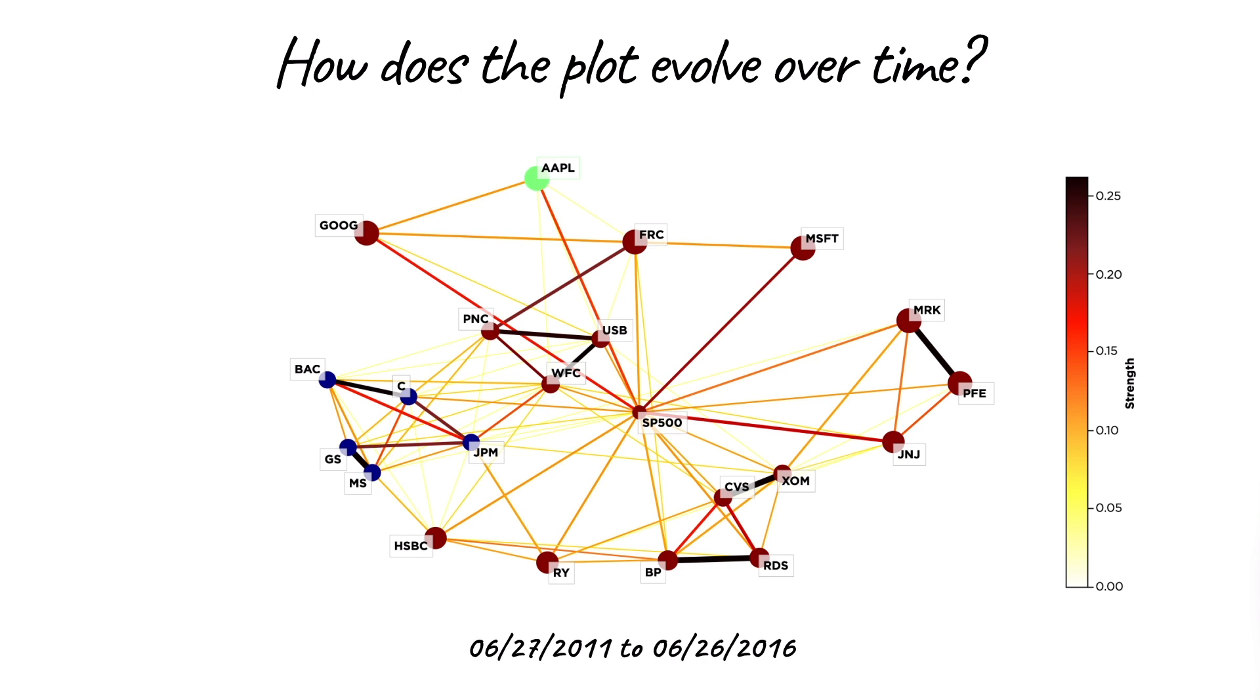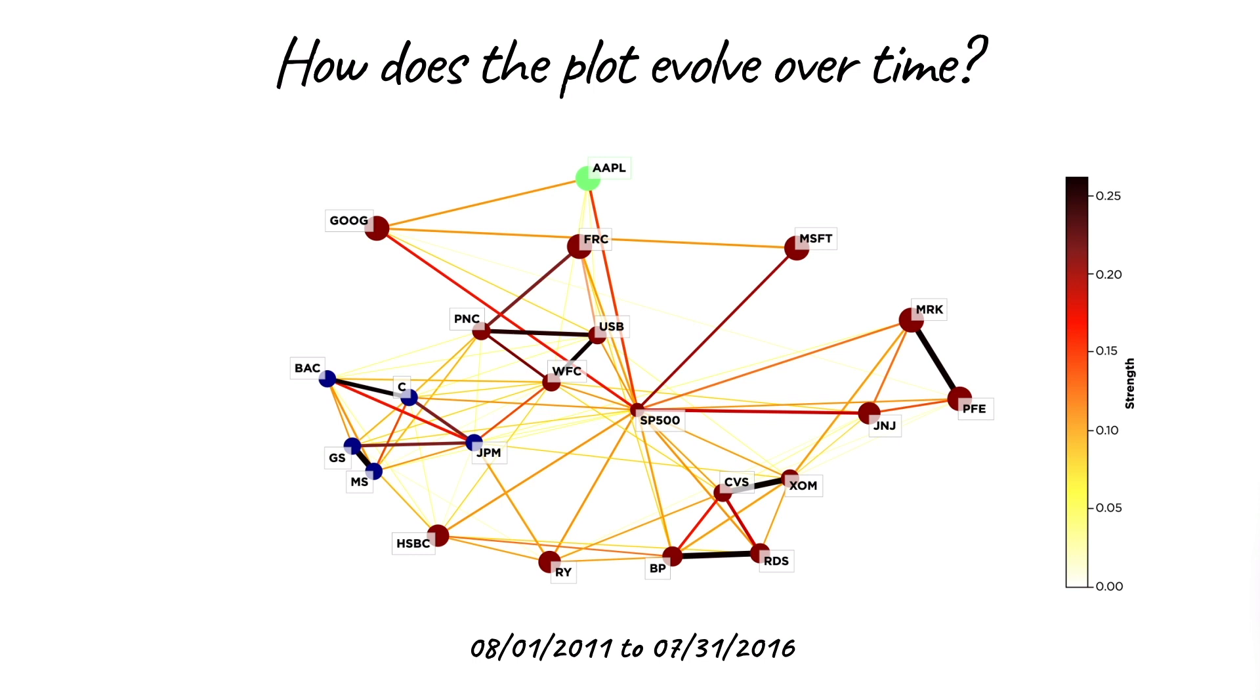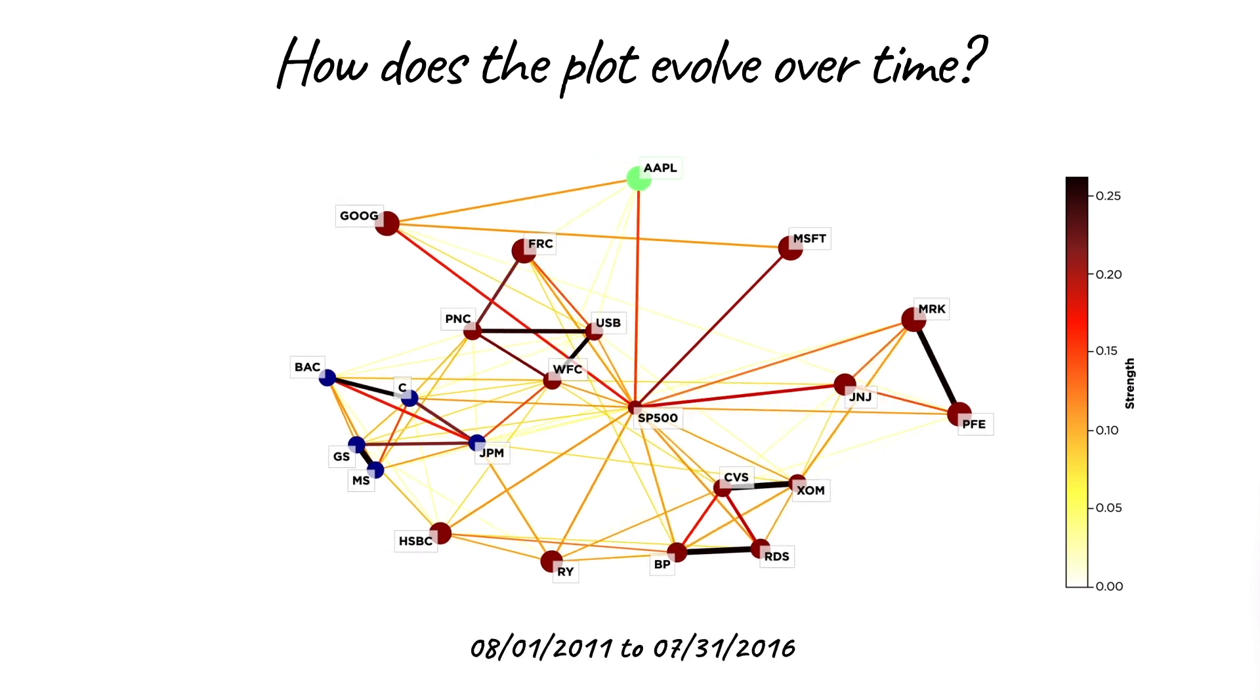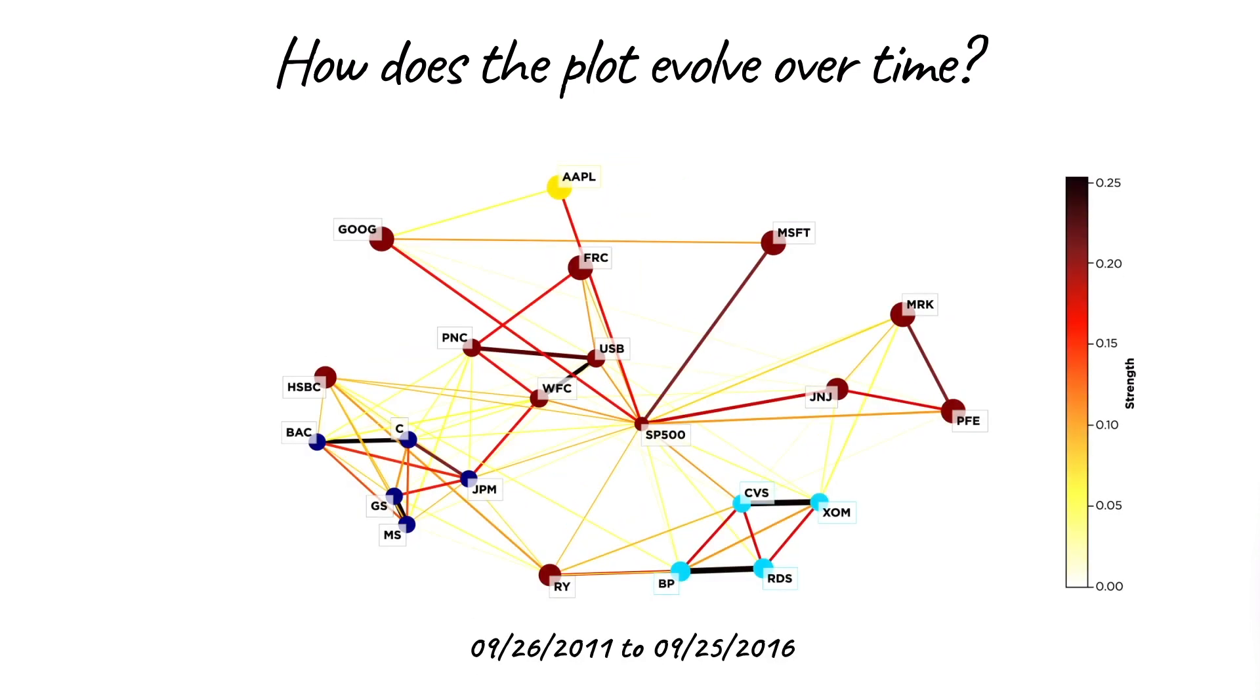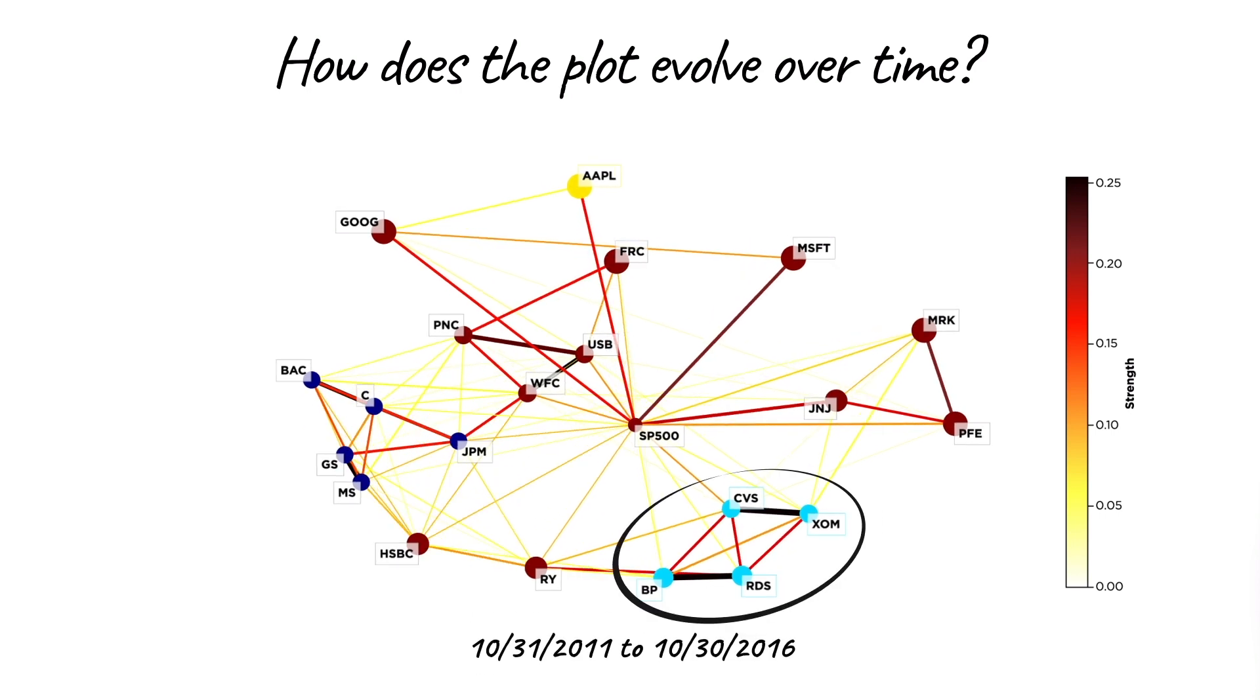At the beginning of the time period, there are only three clusters: the banks, Apple by itself, and all other firms with the S&P 500 market index. As time changes, a new cluster emerges, grouping the four firms from the energy sector together.